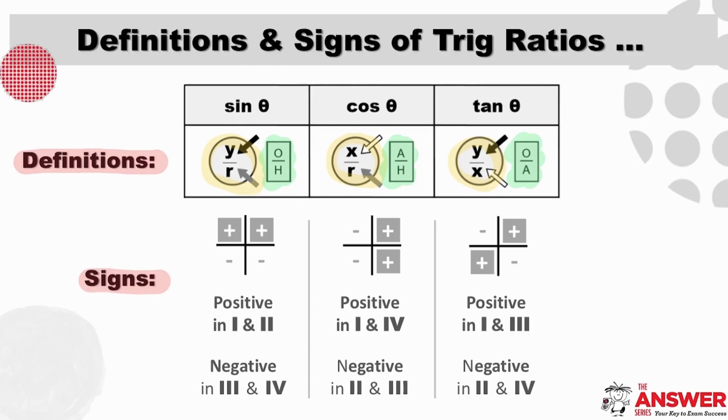And then for tan, which is Y over X, its sign therefore depends on the signs of both X and Y. In other words, tan is positive where X and Y have the same sign and negative where their signs differ.